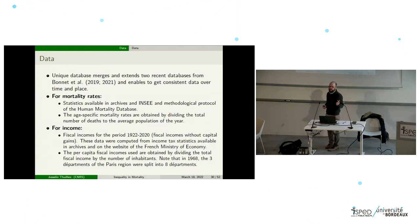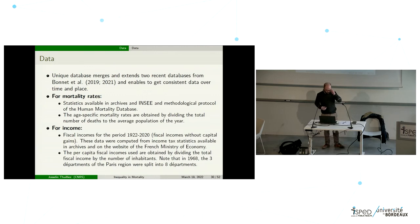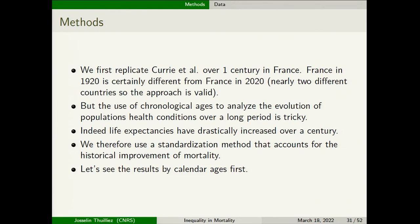We get consistent data over a very long time period — one century of data. Statistics are available from the archives of INSEE, and we also have fiscal income for the period 1920 to 2020 from income tax statistics available from the French Ministry of Economy. This enables us to generate the same kind of trends over time, replicating the Currie and co-authors approach over one century in France.